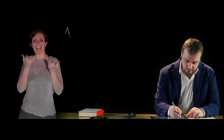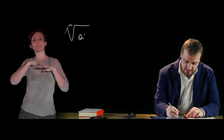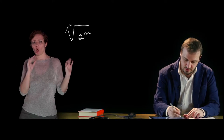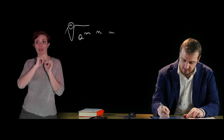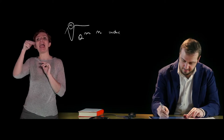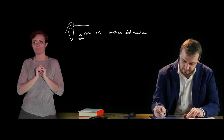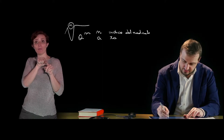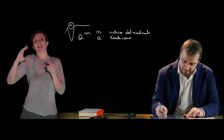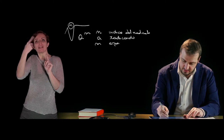Let's start by saying what radicals are. Here they are — this is a radical. In mathematics, a radical is a notation of this type, characterized by n, which is called the index of the radical, by a, which is the radicand, and by m, which is the exponent of the radicand.